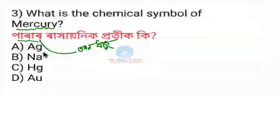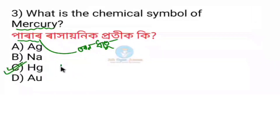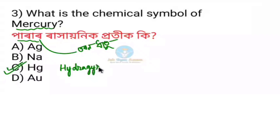The chemical symbol is Ag. The Latin name for mercury is Hydrargyrum — H-Y-D-R-A-R-G-Y-R-U-M.